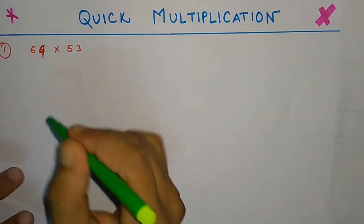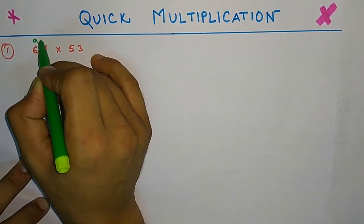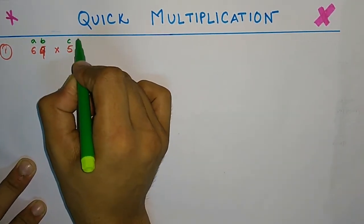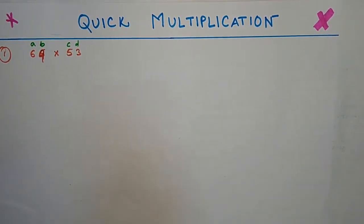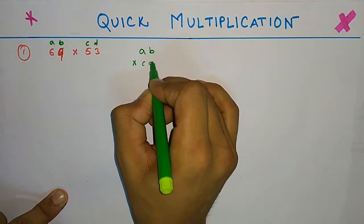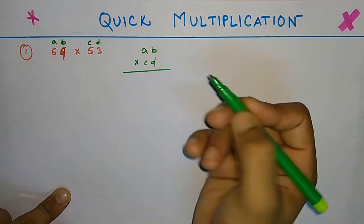To do this kind of multiplication, take the numbers in the form AB and CD for two digits. How will the multiplication proceed?